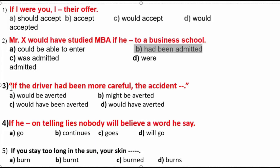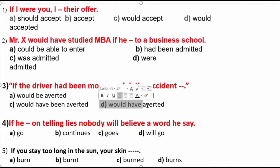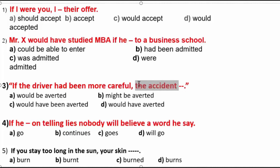Number 3: If the driver had been more careful — we can see had plus B3, that is past perfect. So our answer uses would plus have plus B3. The accident would have been avoided. The answer is C number.